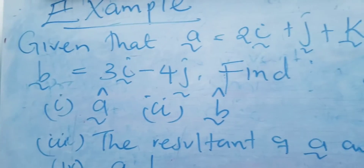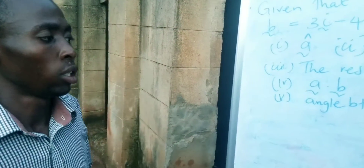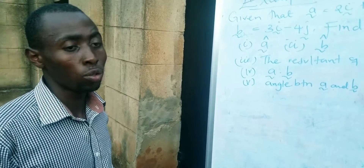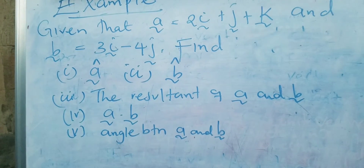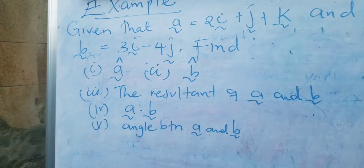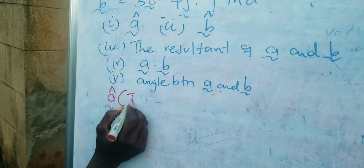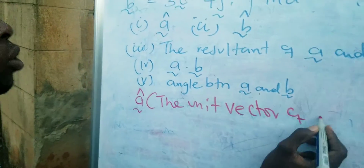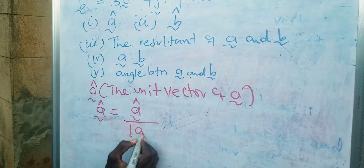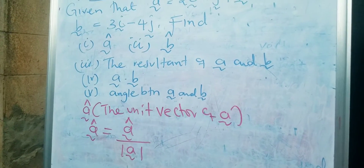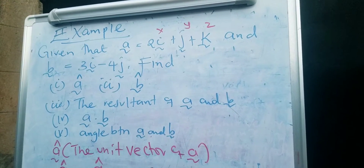We now go to our example, where we are going to find the unit vector of a and of b, the resultant of a and b, the dot product of a and b, and finally the angle between the vectors. A unit vector is given by dividing the vector by its magnitude. Here â (a hat) simply represents the unit vector of a. We have vector a = 2i + j + k, which can also be written as (2, 1, 1).